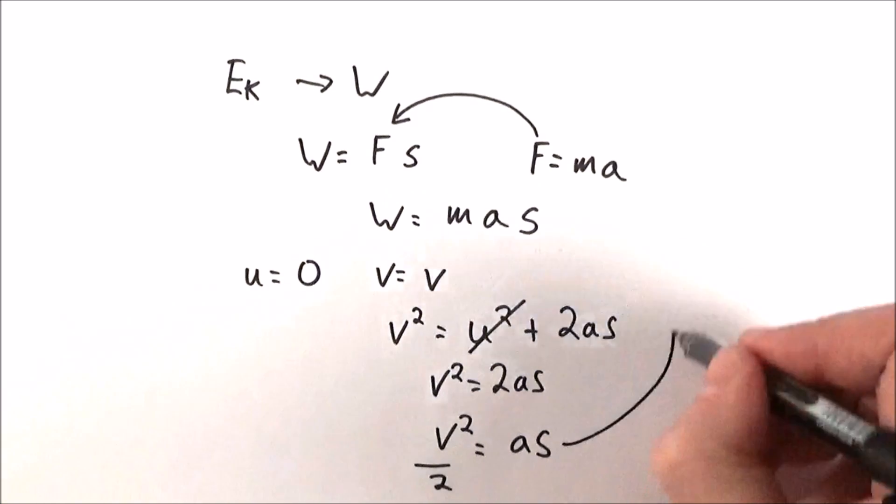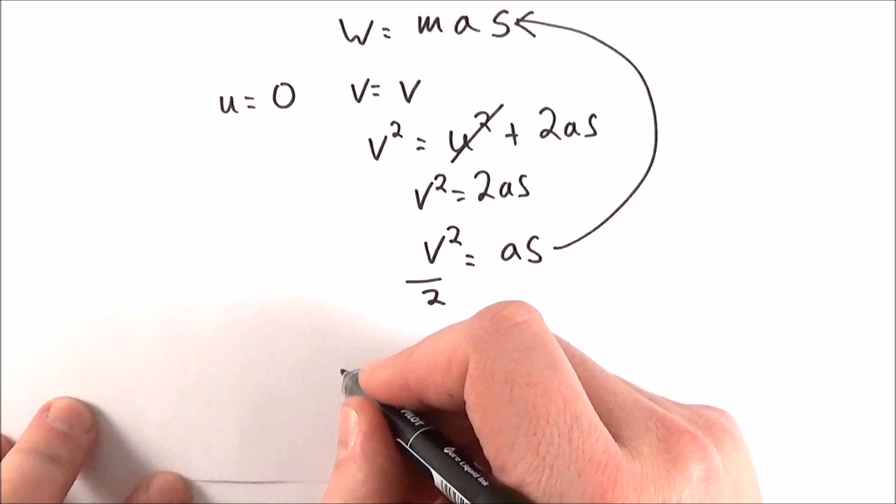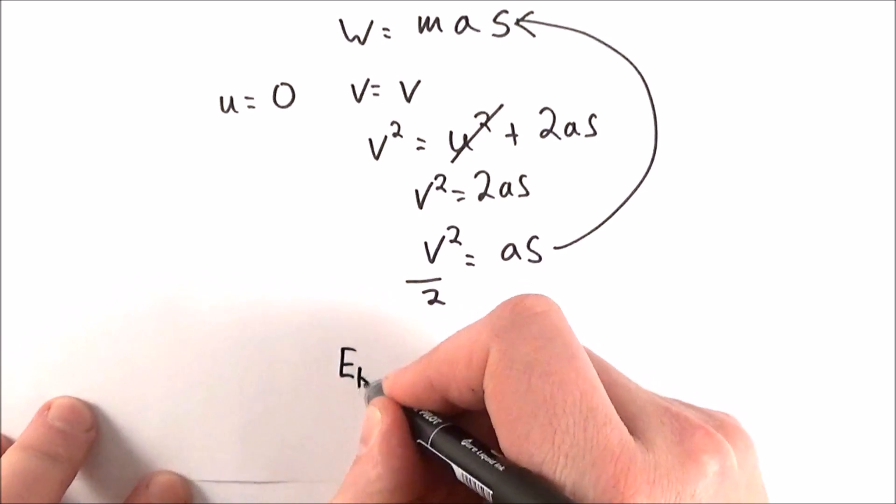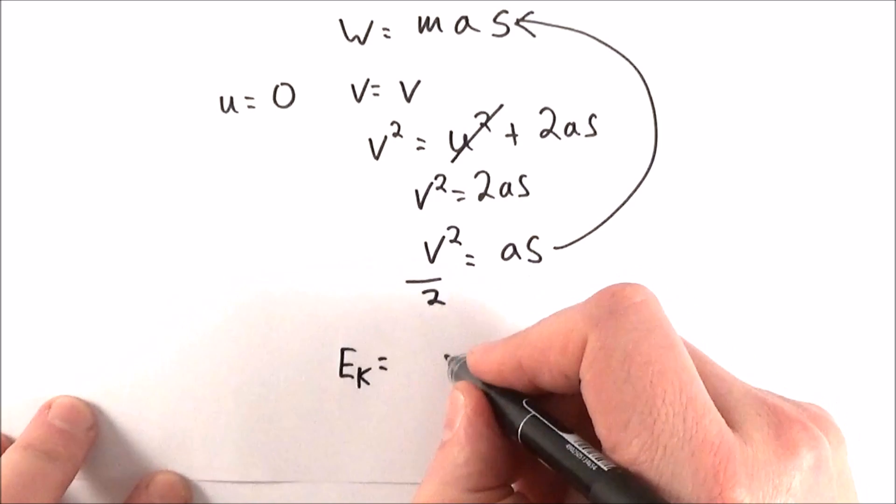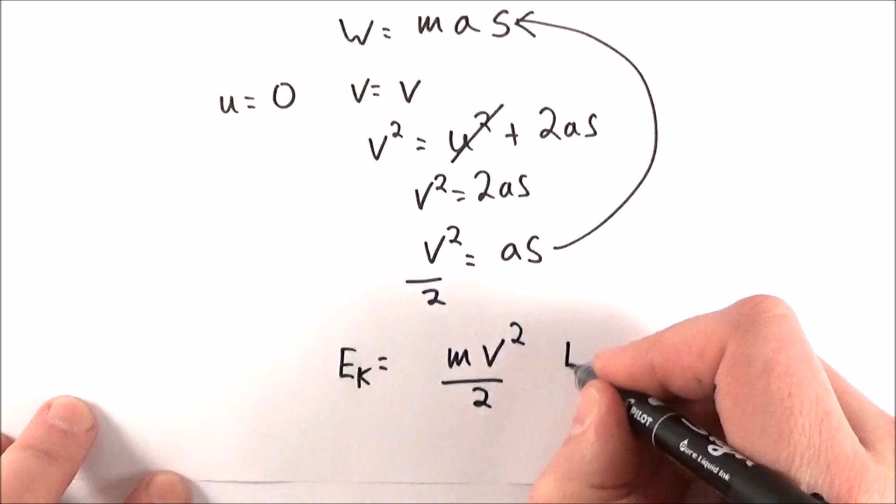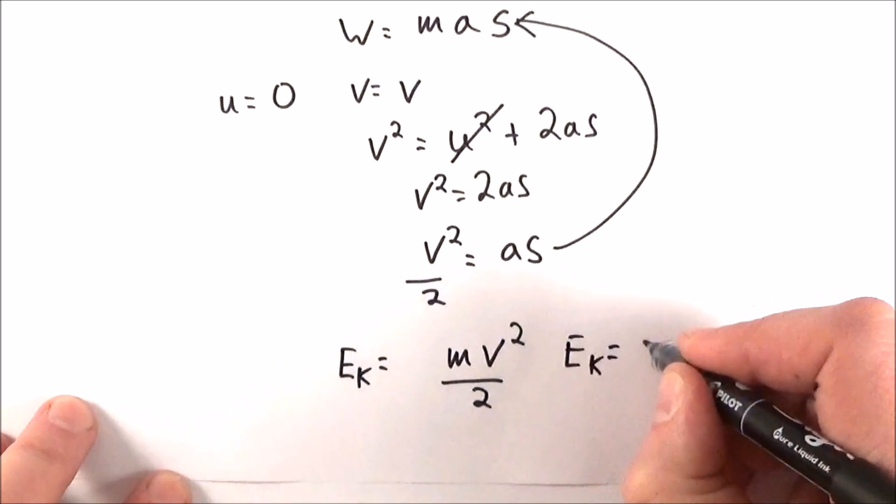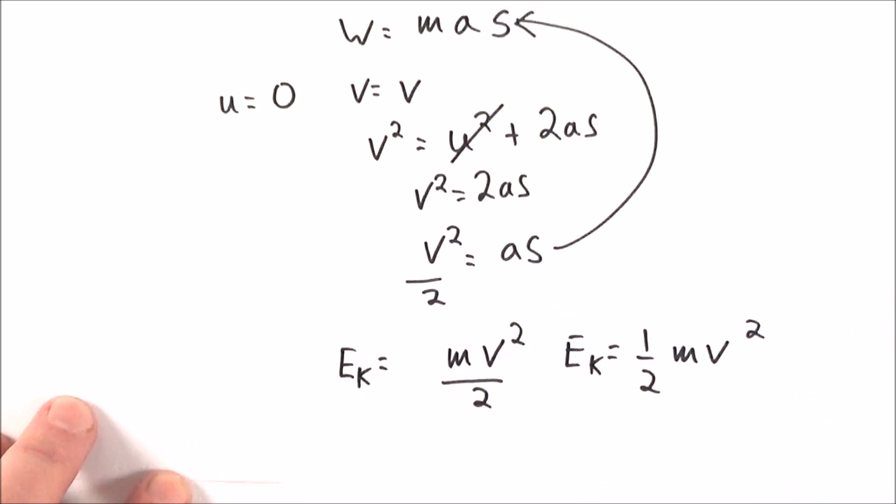If I then substitute this back into that equation over there, we can say that the work done to accelerate an object to give it its final kinetic energy is equal to the mass times v squared over 2. So therefore, Ek, the kinetic energy, is equal to a half times the mass times its velocity squared.